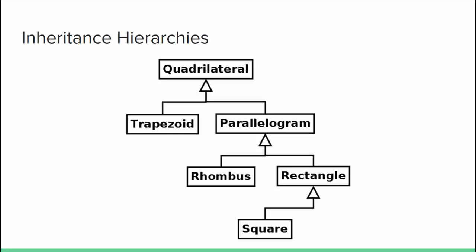Java and most other modern object-oriented languages only support single inheritance — a child class can only have one parent. A square is both a rhombus and a rectangle by definition, but in an object hierarchy a square would only be allowed to have one parent and would have to pick one. This might seem silly, but it solves more problems than it creates. In practice, most of what people want to accomplish with multiple inheritance can be done with interfaces, and a class can implement any number of interfaces.